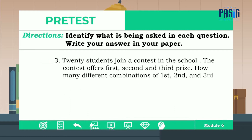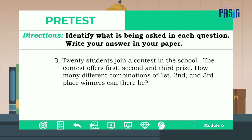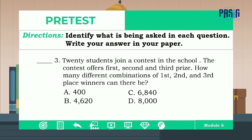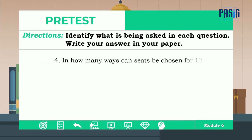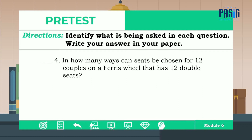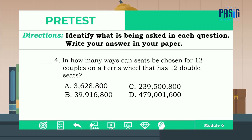Number three: 20 students join a contest in the school. The contest offers first, second, and third prize. How many different combinations of first, second, and third place winners can there be? The answer is letter C. For number four: in how many ways can seats be chosen for 12 couples on a Ferris wheel that has 12 double seats? The correct answer is letter B.